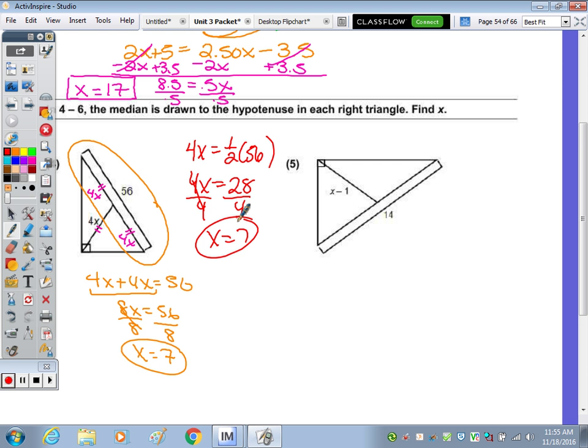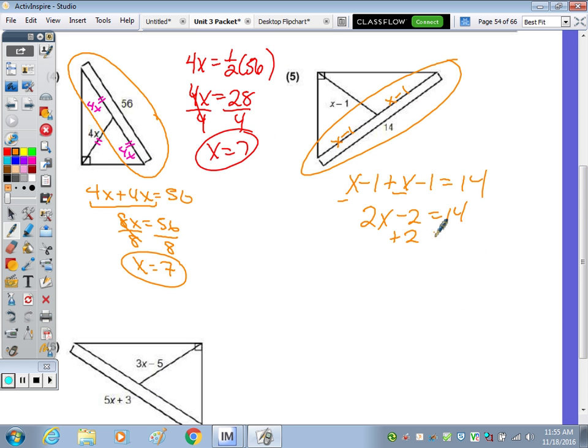In this case, if this is X minus one, this is X minus one, this is X minus one. So then the hypotenuse would be X minus one plus X minus one equals 14. X plus X is two X. Negative one, negative one is negative two. Add the two, divide by two. X equals eight.